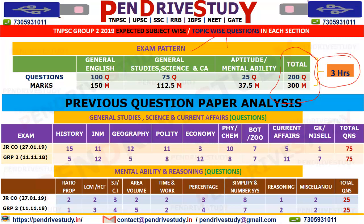In the 200 questions, we divide them as follows: there is a language paper — either General English or General Tamil — and then 100 questions for General Studies.